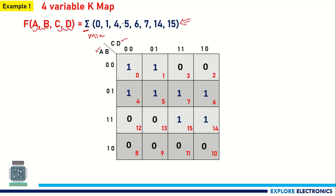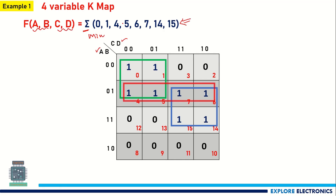Now we need to start grouping. Before grouping, look for any four adjacent cells having ones. Here we get one group of four adjacent cells with ones, and then one more group of four adjacent cells with ones.